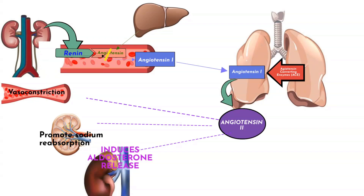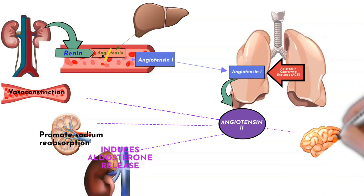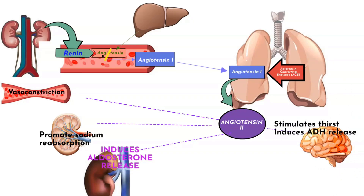In the brain, angiotensin-2 has several effects. It acts on the hypothalamus to stimulate thirst and encourage water intake. It induces the posterior pituitary to release anti-diuretic hormone and promotes water retention in the kidneys. It also reduces the sensitivity of baroreceptors so that they will not counter the effects of the renin-angiotensin-aldosterone system. All of these effects of angiotensin-2 lead to an increase in blood pressure.